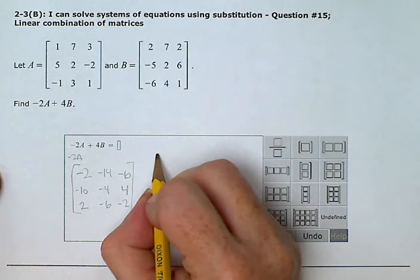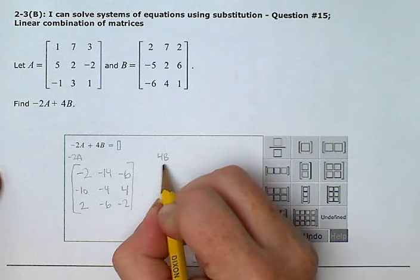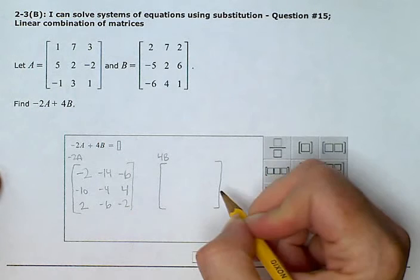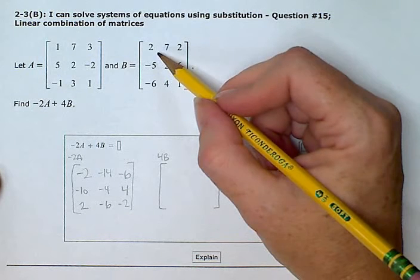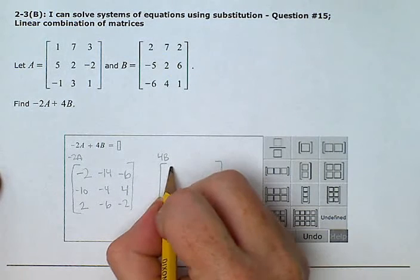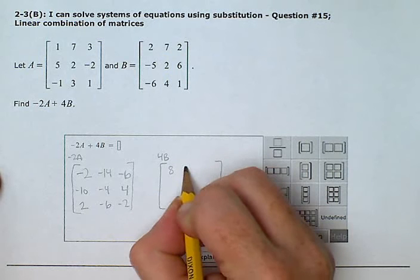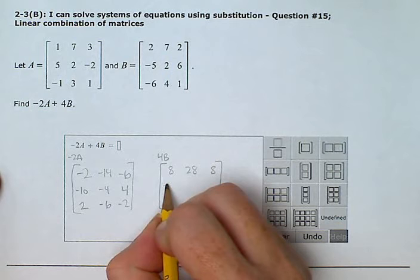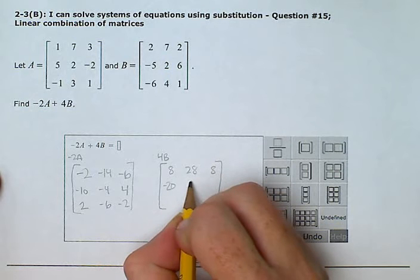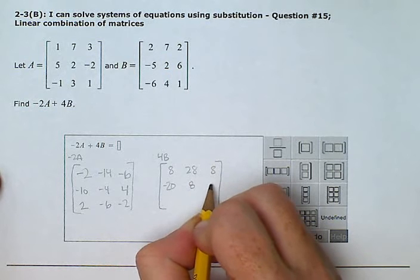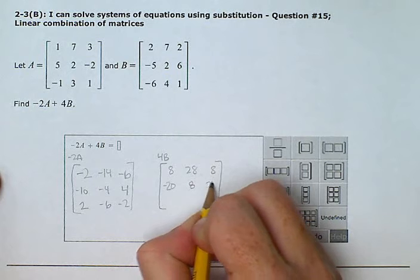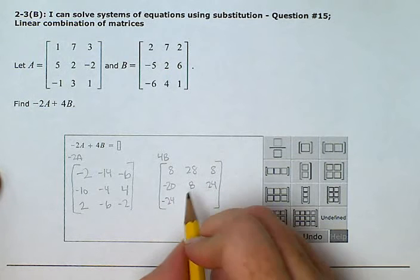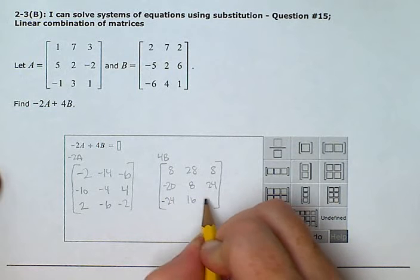Now we're going to write what 4B equals. And again, I'm taking every number in B and multiplying it by 4. So I get 8, 28, 8, -20, 8, 24, -24, 16, and 4.